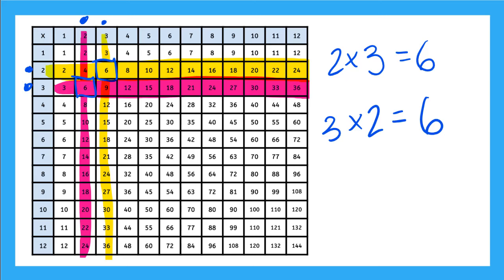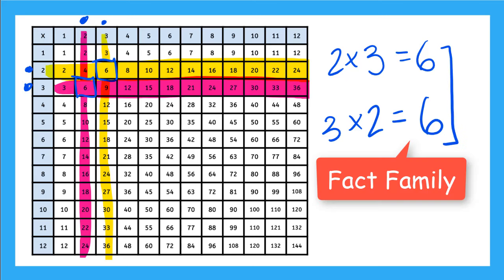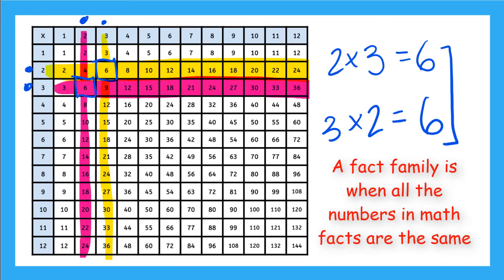So this tells me that 2 times 3 and 3 times 2 are a fact family. A fact family is when all the numbers are the same in different math facts.